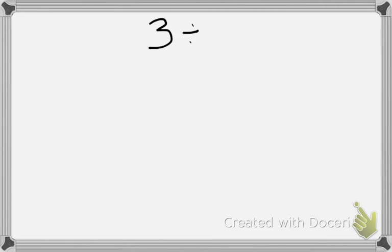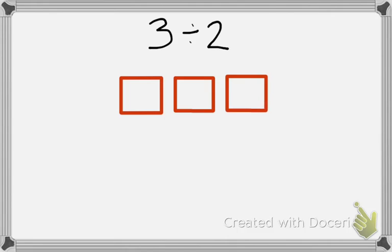Three divided by two. Now we have three crackers that we're going to share among two people. So I'm going to partition my crackers into two parts and each part will be one half.